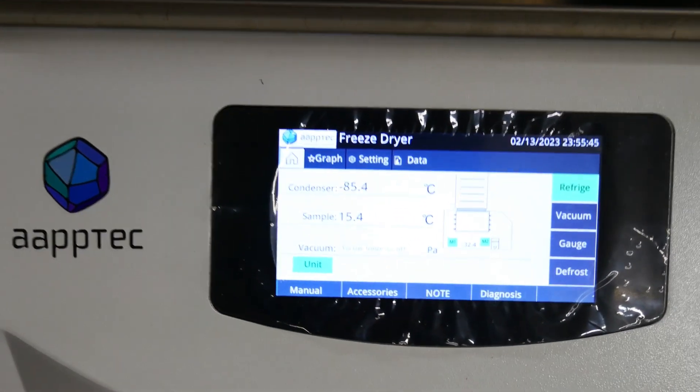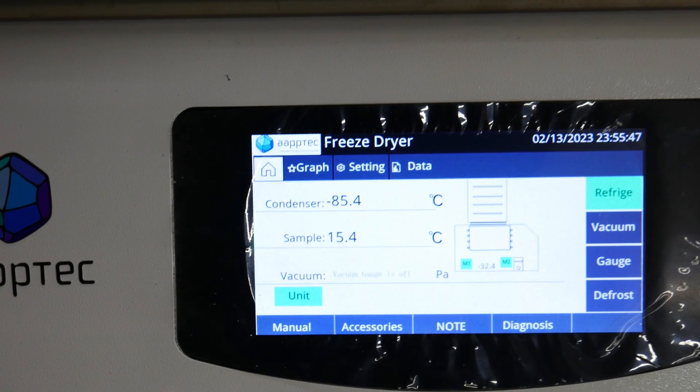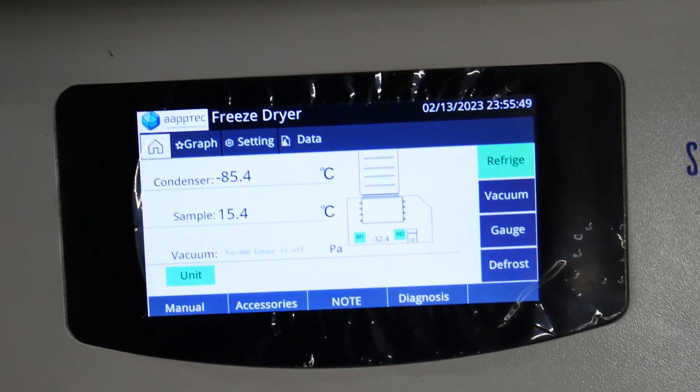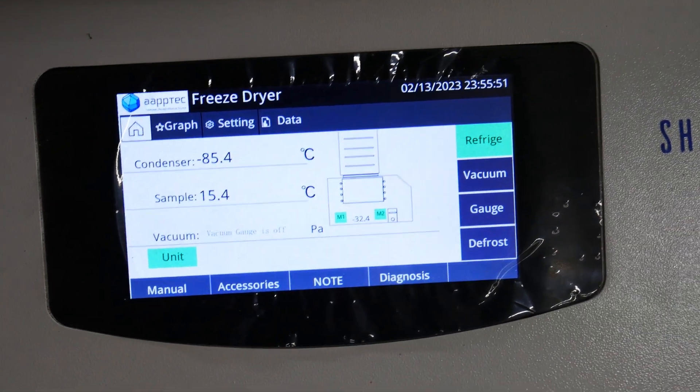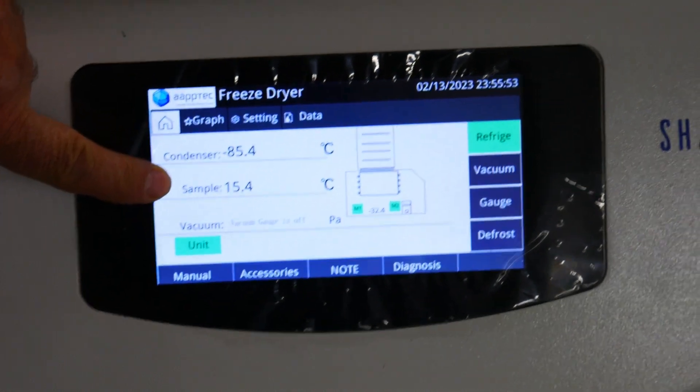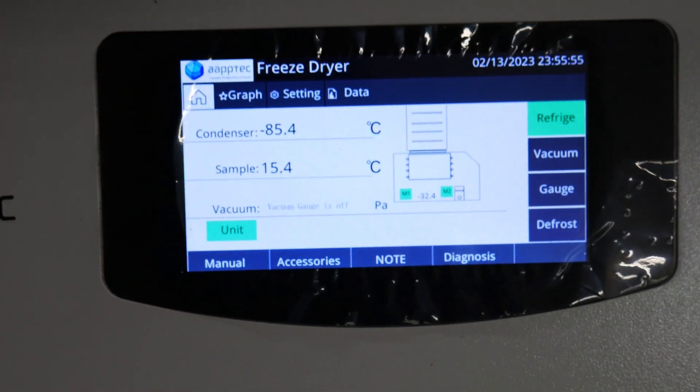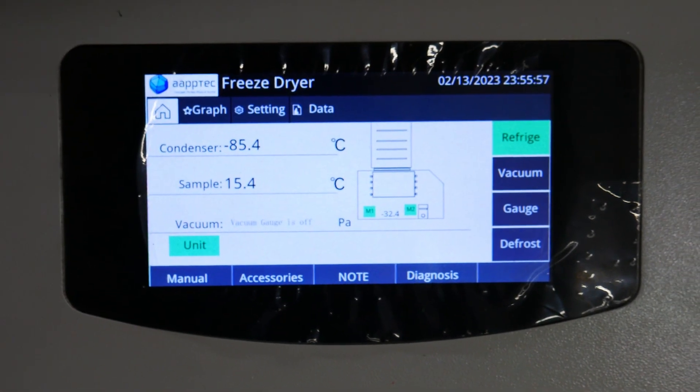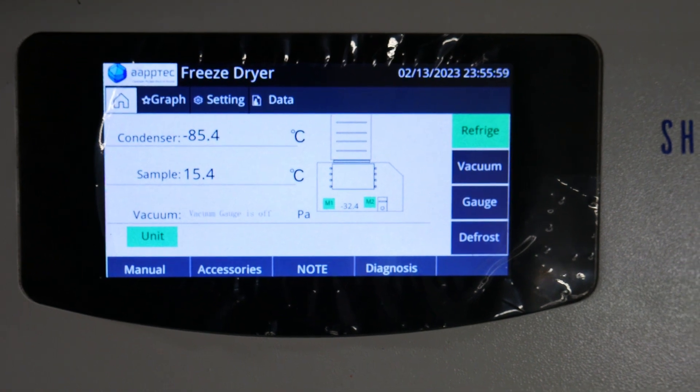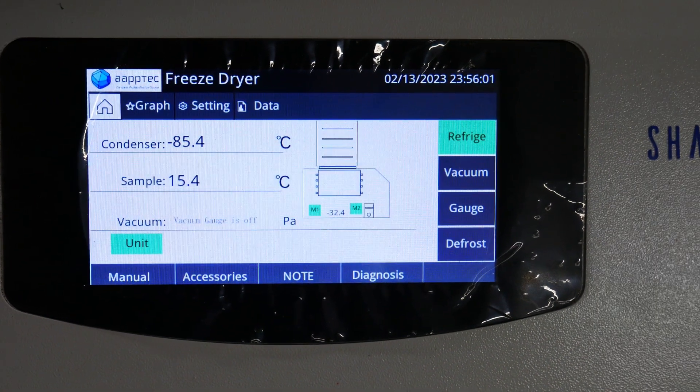The system is set up for minus 80 degrees, but you can see it shows minus 85 degrees. You also have a temperature sample which is sampling the temperature of the material or peptides inside the chamber. At the moment, it shows 15.4 degrees.